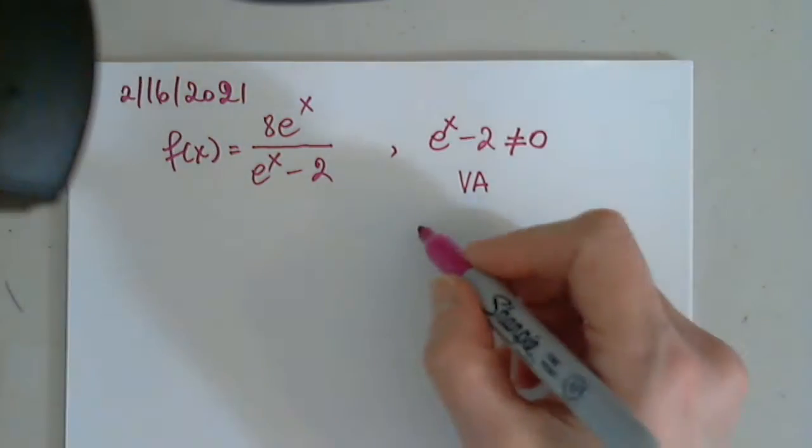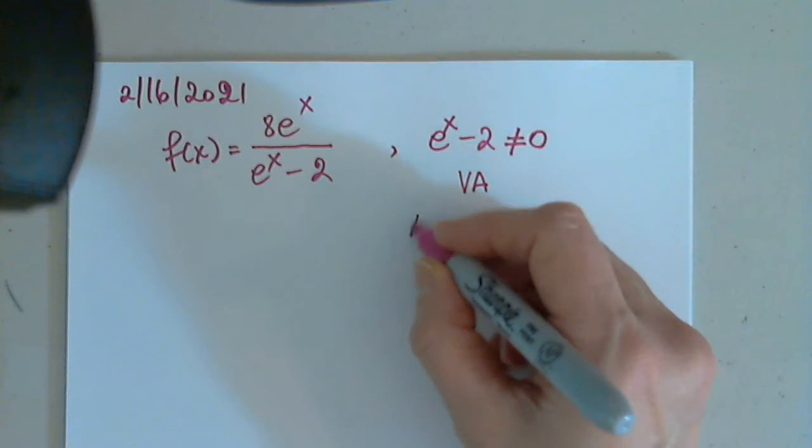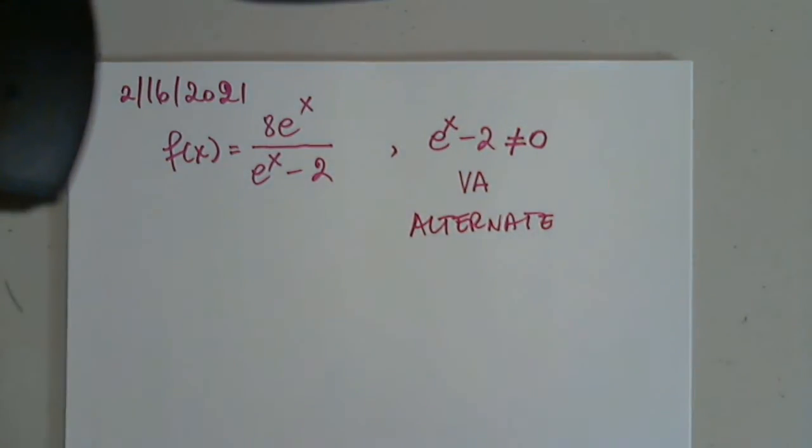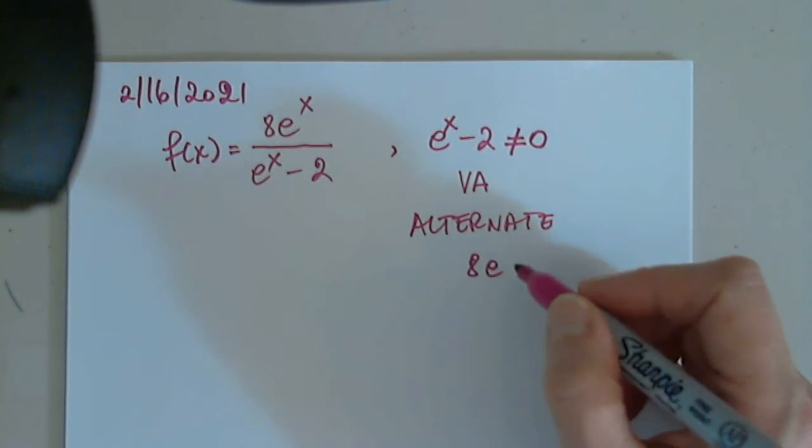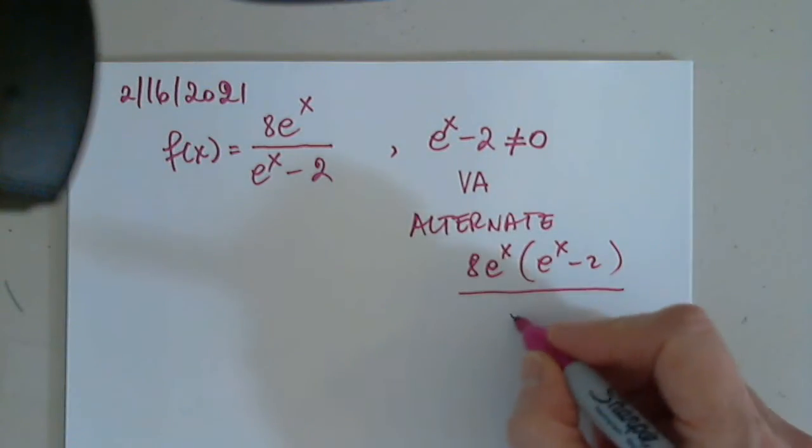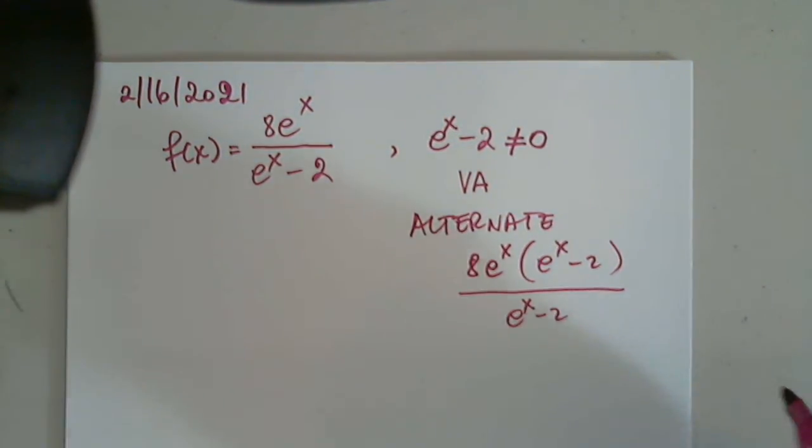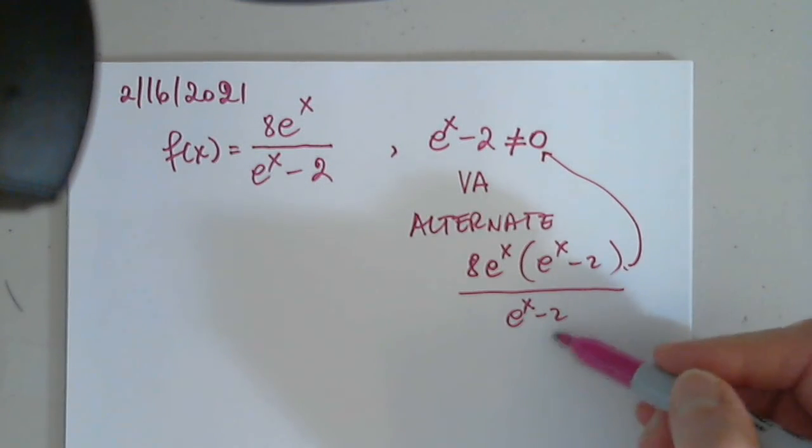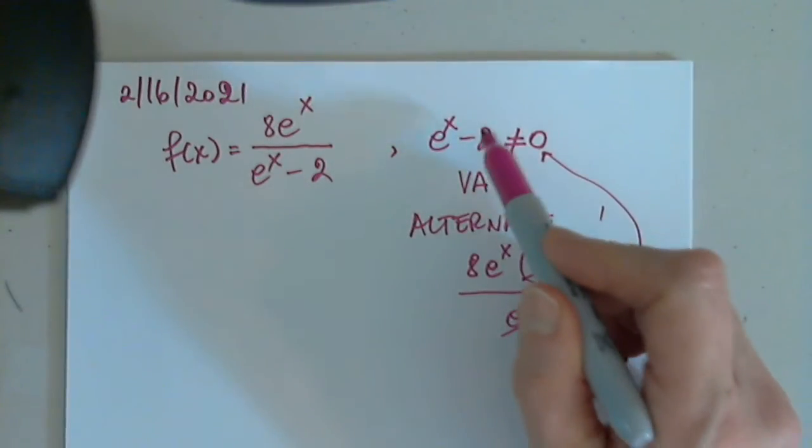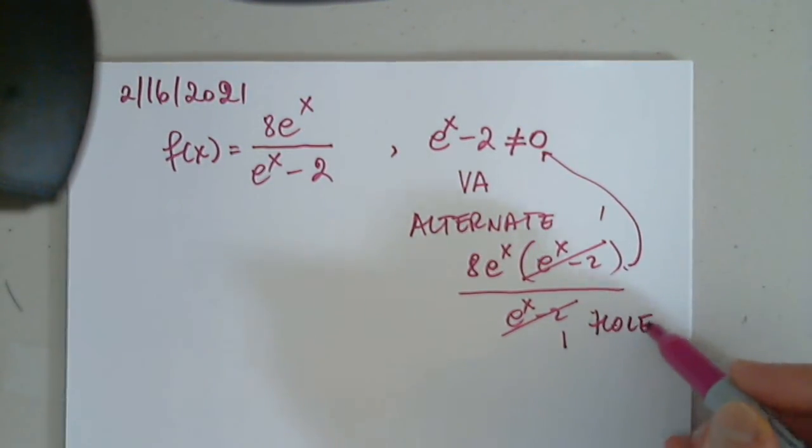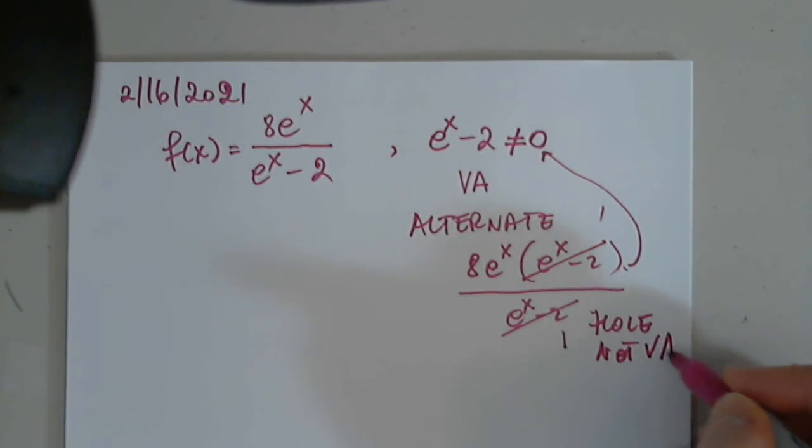If it does go away, as an alternate example, if I have e to the x divided by e to the x minus 2, and then I have e to the x minus 2 in the numerator, I still have to write this restriction for the denominator, but I will be simplifying it and the result of this equation, that solution, will create a hole, not a vertical asymptote.